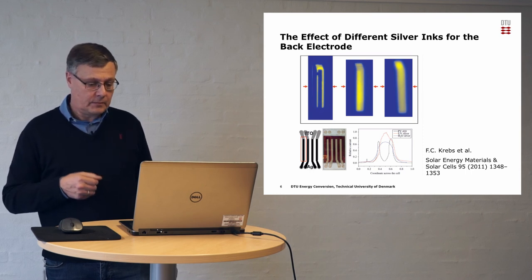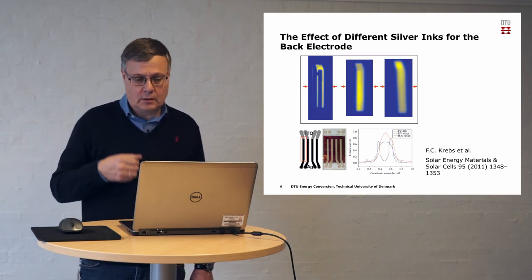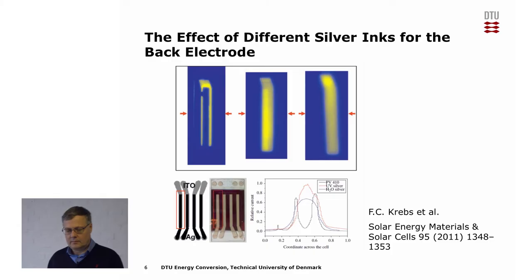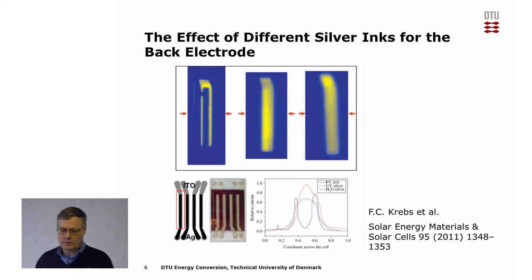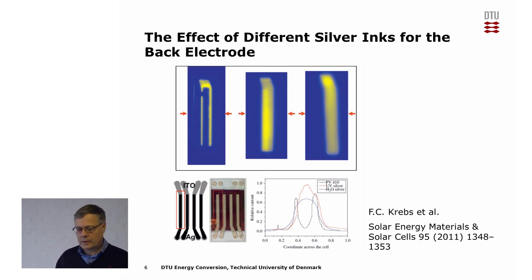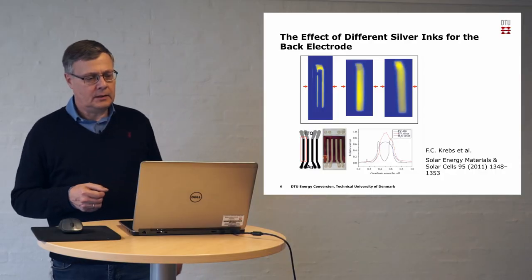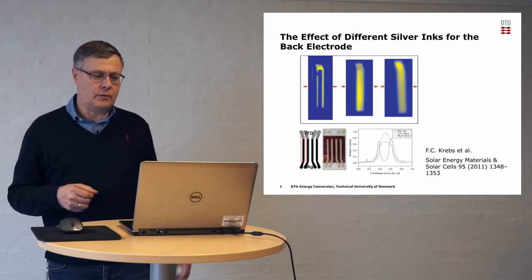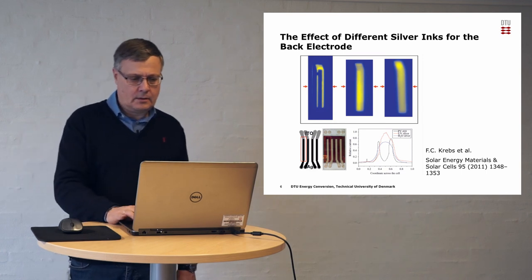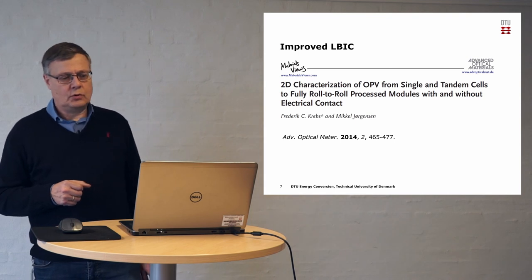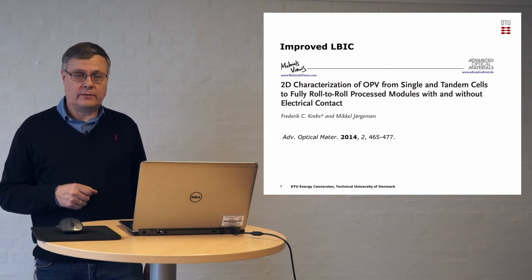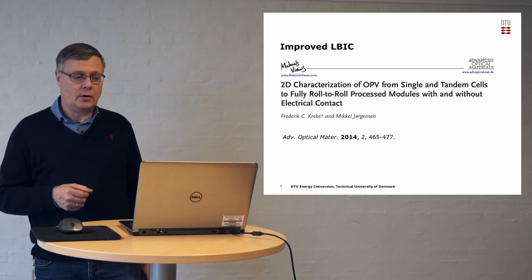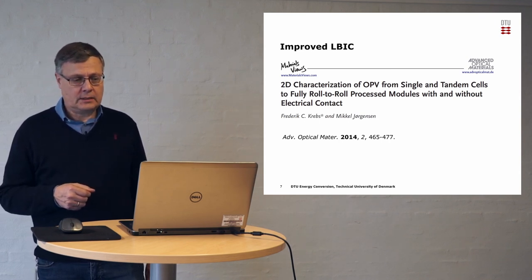Based on these images, we could select the UV curable ink as the best one. This showed that ELBIC was a valuable tool for extracting this kind of information. Here is another example with the same three different types of silver ink, where the silver electrode has been made somewhat larger, and you can see the effect of how the heat curing ink destroys the solar cell function much more readily. Because this technique was so slow but obviously very useful, we tried to find other ways to improve it and make it much faster.